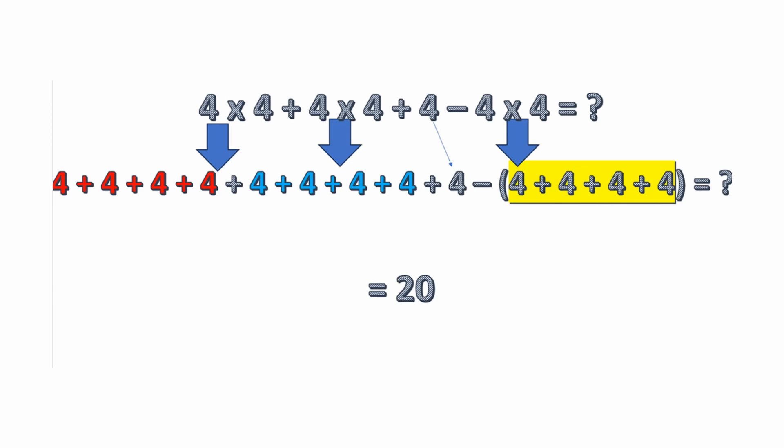Multiplication is just repeated addition. It's much easier to write 4 times 4 than to write 4 plus 4 plus 4 plus 4. Another way to solve this is to replace all the multiplication with addition. This first 4 times 4 is grouped in red: 4 plus 4 plus 4 plus 4. The second 4 times 4, in cyan, is 4 plus 4 plus 4 plus 4. Then we just have a plus 4 by itself.